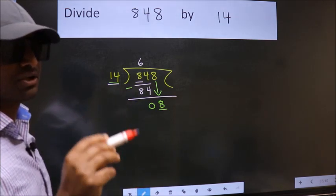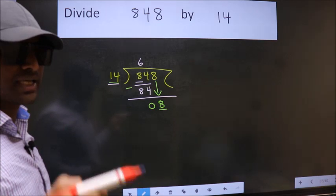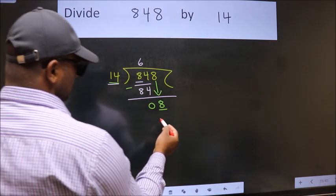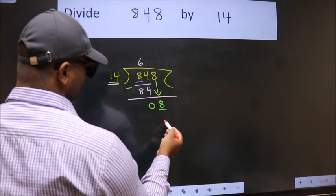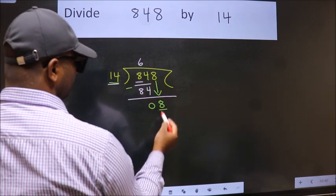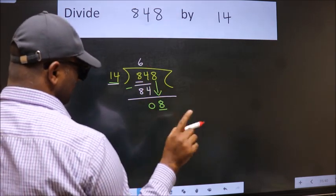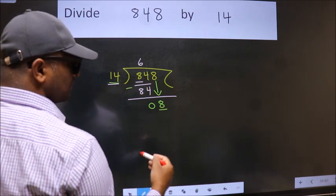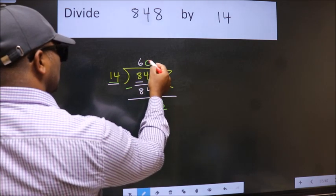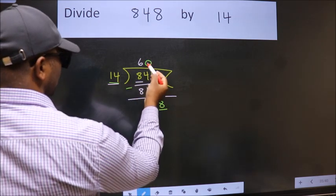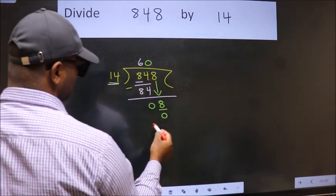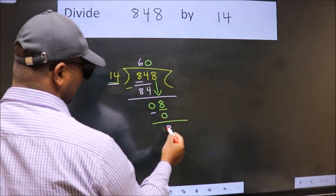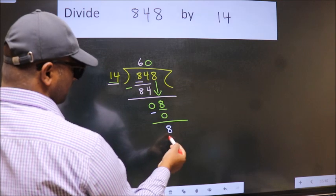Instead of that, what we should think of doing is: which number should we take here? If I take 1, we will get 14, but 14 is larger than 8. So what we do is we take 0 here. So 14 into 0 is 0. Now we subtract, we get 8.